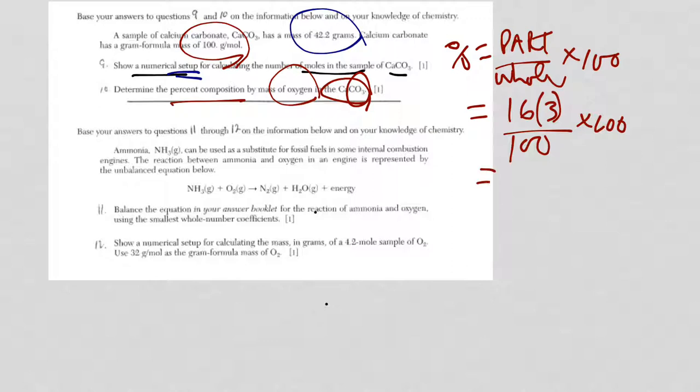16 times 3 is 48. 48 over 100 times 100. The hundreds cancel. My answer is 48%. That's for number 10.